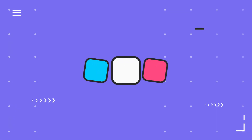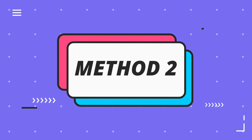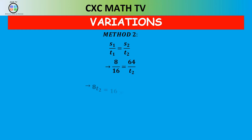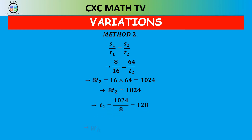There's another way to do direct variation. Because both quantities increase or decrease at the same rate, we can say s₁ over t₁ equals s₂ over t₂. So 8 over 16 equals 64 over the t value we need to find. We cross-multiply and find t equals 128 — the same answer. That's method two of doing direct variation; either way is fine, but we prefer method one.